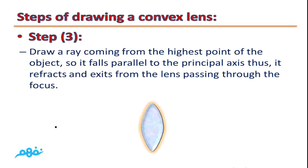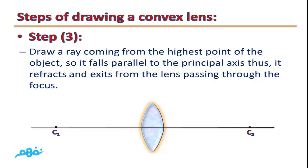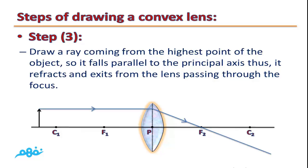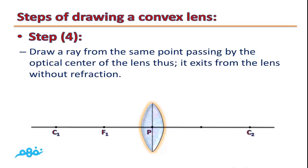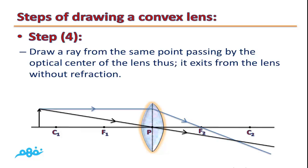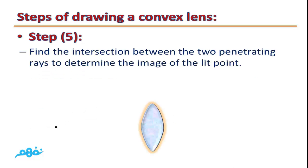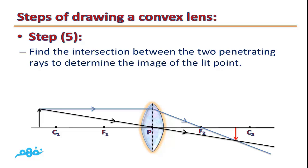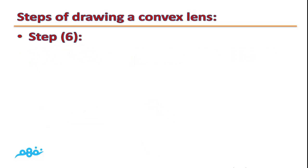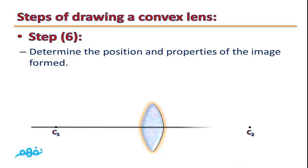Step 3: Draw a ray coming from the highest point of the object, parallel to the principal axis; it refracts and exits the lens passing through the focus. Step 4: Draw a ray from the same point passing through the optical center of the lens; it exits without refraction. Step 5: Find the intersection between the two refracted rays to determine the image of the object point. The final step: determine the position, formation, and properties of the image.